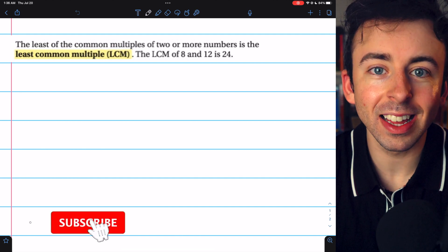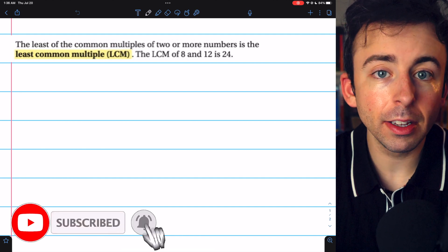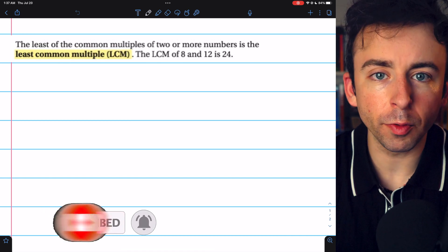Numbers have common multiples, like 8, for example, is a multiple of 2 and a multiple of 4.